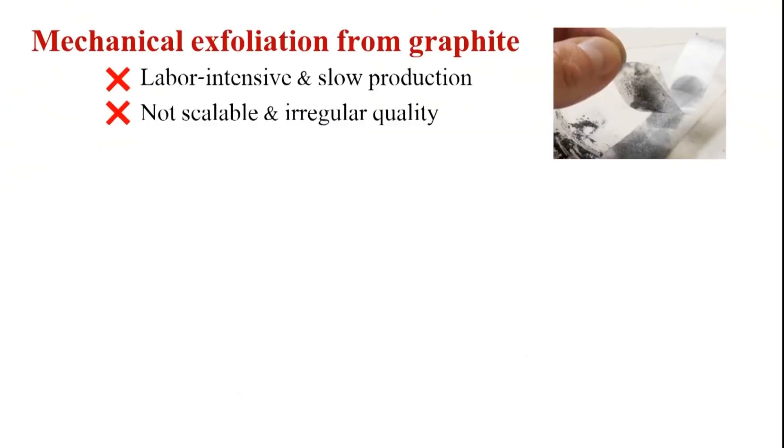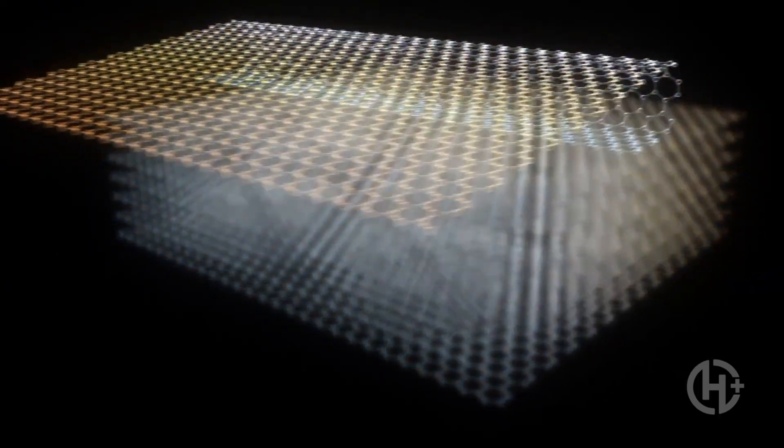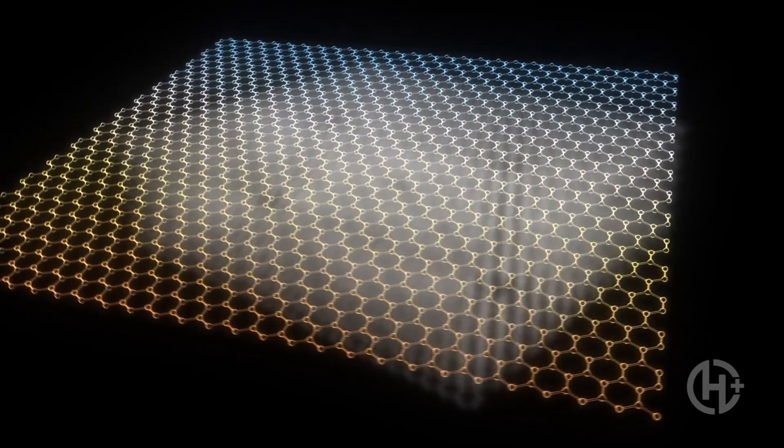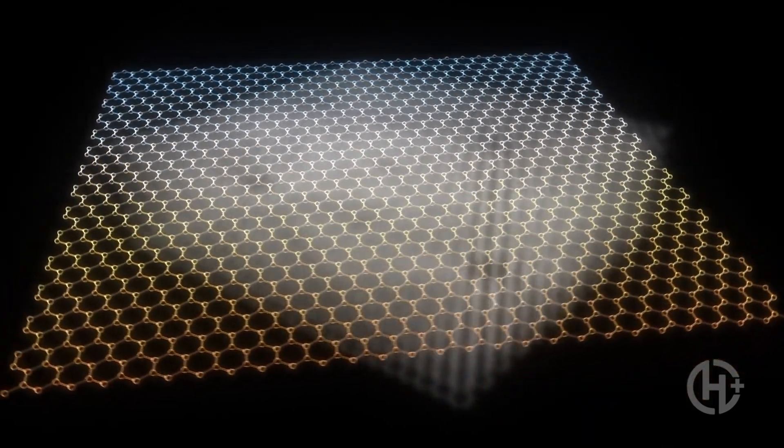First, mechanical exfoliation. A labor-intensive process where we press graphene into one-atom thick sheets, thinning graphite with a smooth silicon substrate and peeling it off layer by layer. Which, you guessed it, sounds very inefficient and uneconomical.